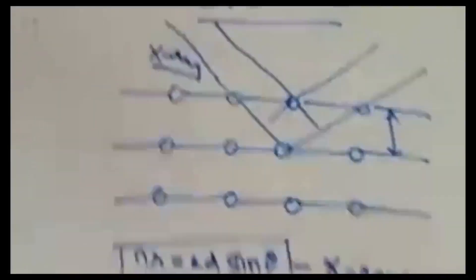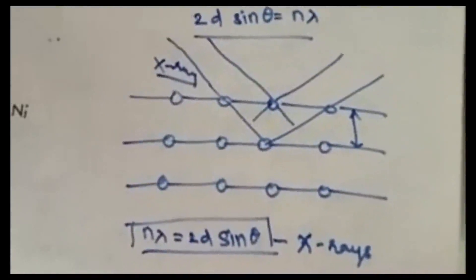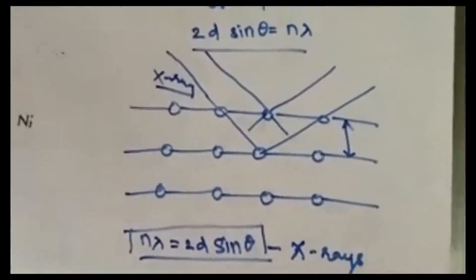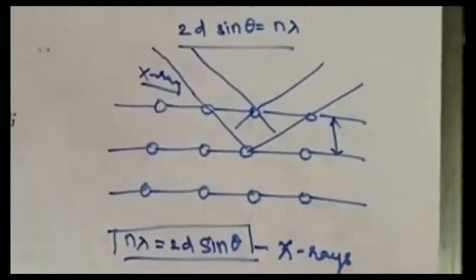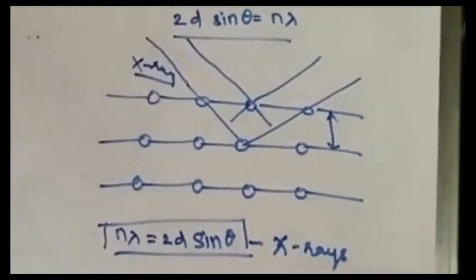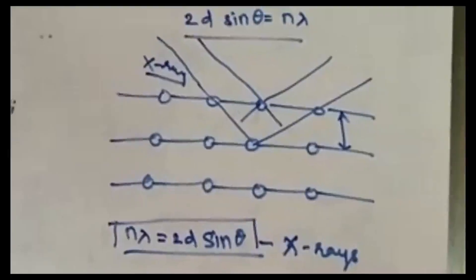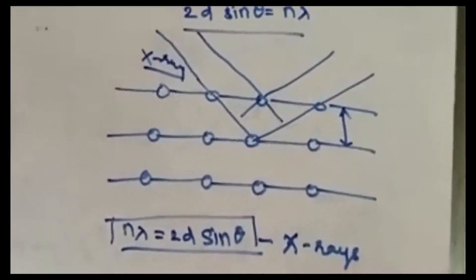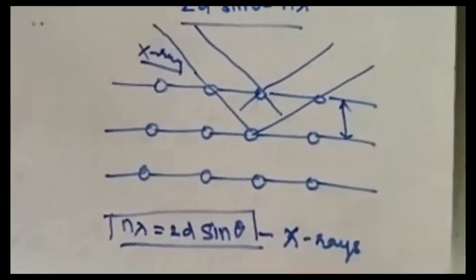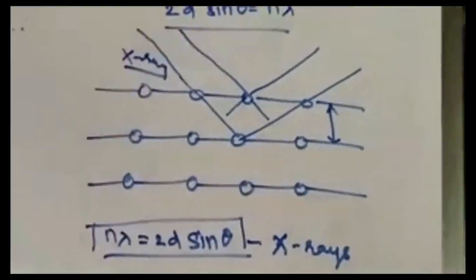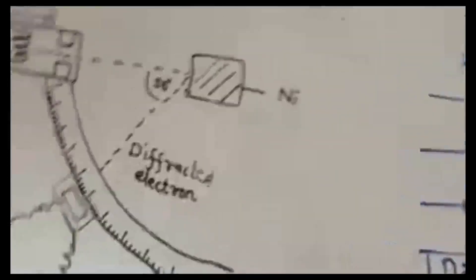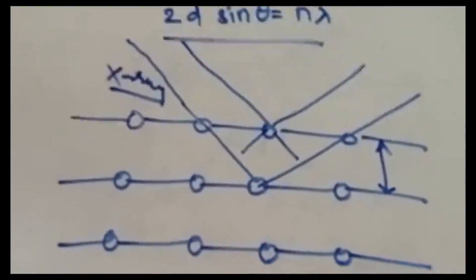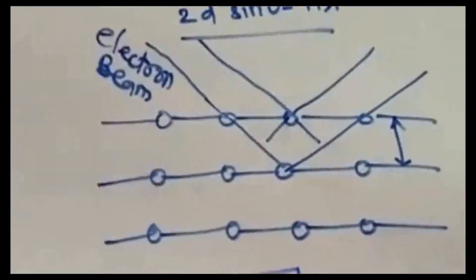The Bragg's equation n lambda equals 2d sin theta is valid for X-rays because X-rays are waves. Davison and Germer incident an electron beam on the metal surface and found that the electron beam also follows Bragg's equation. So the two proofs are: the Davison-Germer experiment and the Bragg's equation validation. Both prove that the electron beam has wave nature — confirming De Broglie's hypothesis.